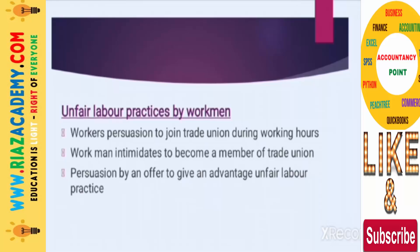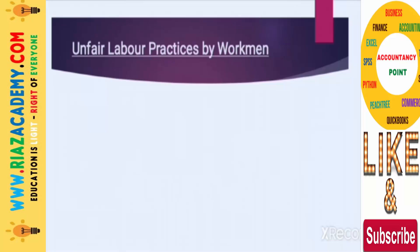Next is persuasion by an offer — where a workman pursues someone through an offer or material interest, using restraint or inducement. Restraint means preventing someone and inducement means coercing them. If both of these methods are applied to any member to make them a trade union officer or member in exchange for some advantage, this offer is also an unfair labor practice.